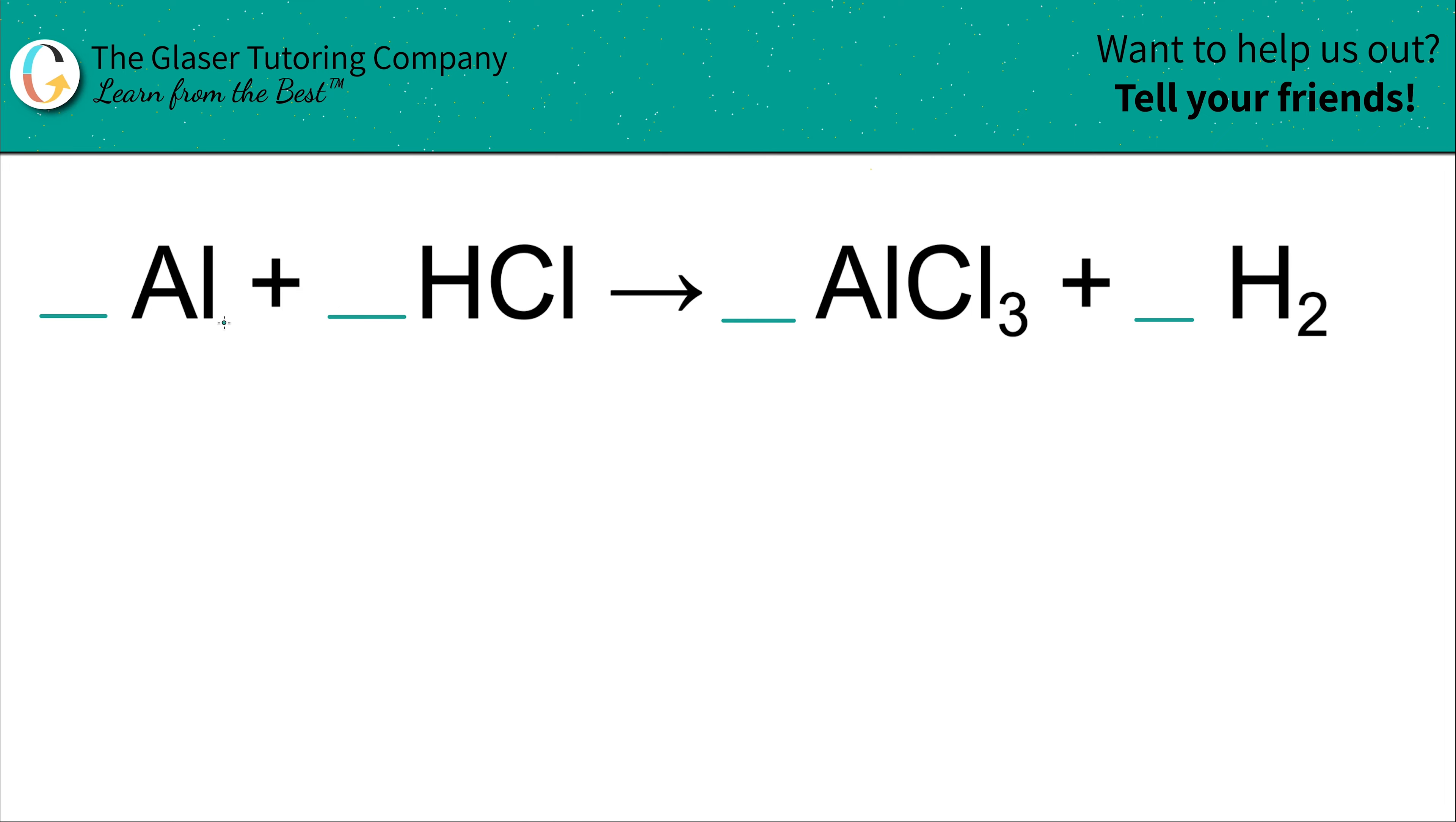So we have one aluminum on the left-hand side. That's where the subscript comes into play. And we also have one aluminum because the subscript is a one over there on the right-hand side. So that's balanced. So now we're going to move on.